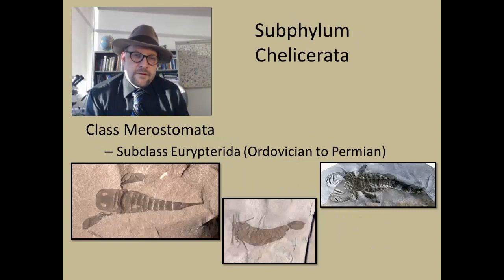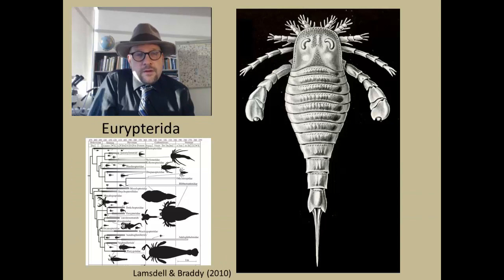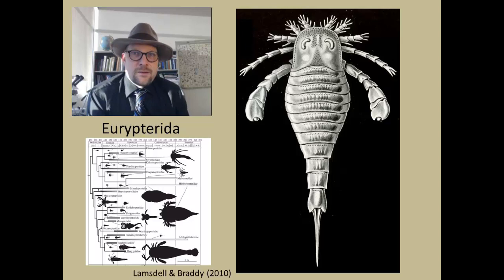Now closely related to the horseshoe crabs, often times placed within the same class, are the sea scorpions, the Eurypterids. The Eurypterids lived from the Ordovician to the Permian, having fallen victim to the Permian-Triassic extinction, just about like everything else.